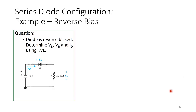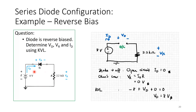Next is a situation where the same circuit has the diode reverse biased. We want to determine VD, VR, and ID using Kirchhoff's Voltage Law, just as we did before.